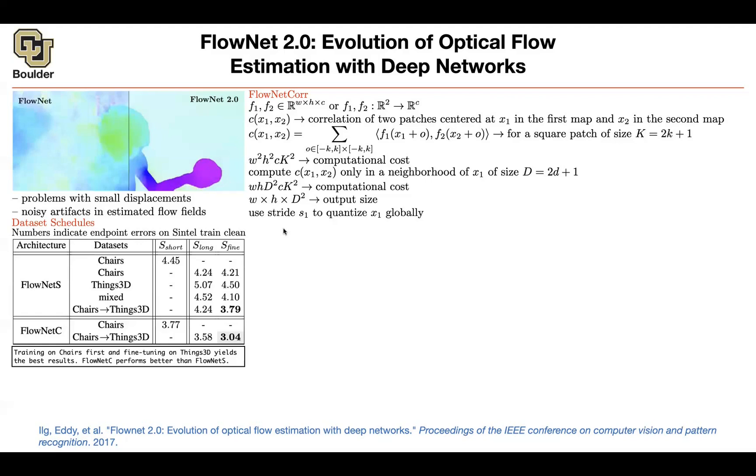Not only that, you can reduce the cost even further. Rather than striding x1 in your f1 every pixel, stride it every couple of pixels. Then you can reduce this output size. At the same time, you can stride x2 around x1. x2, the distance between x2 and x1 doesn't have to be one pixel. It could be two pixels, like what you were doing with dilated convolutions. So this way you can make it cheaper.